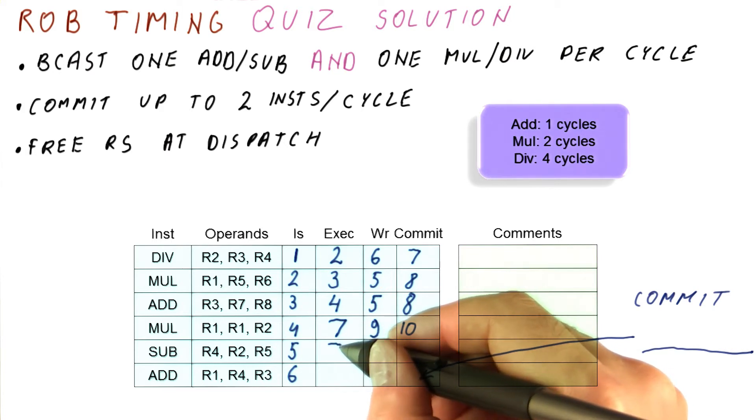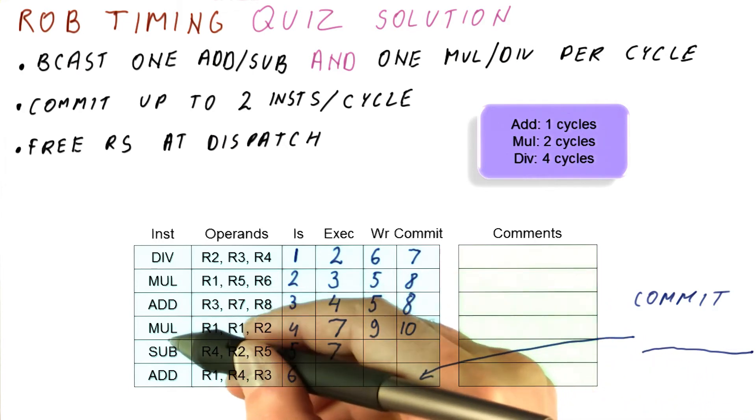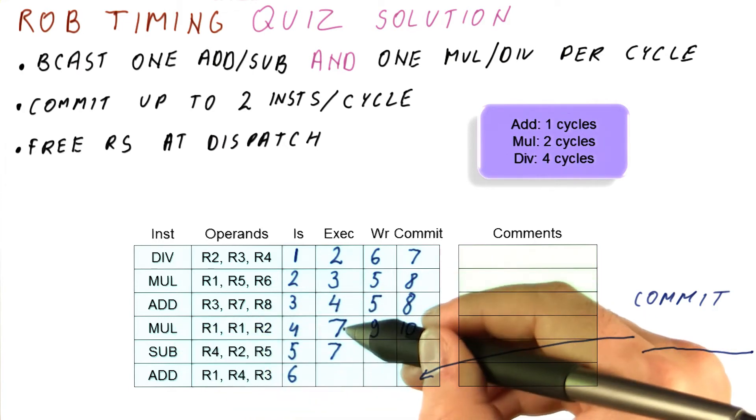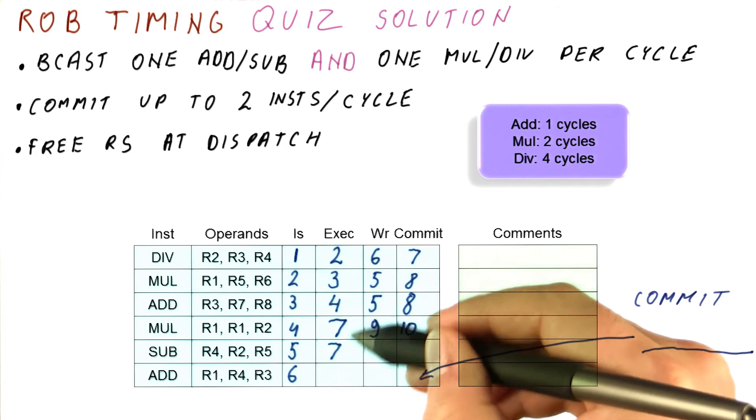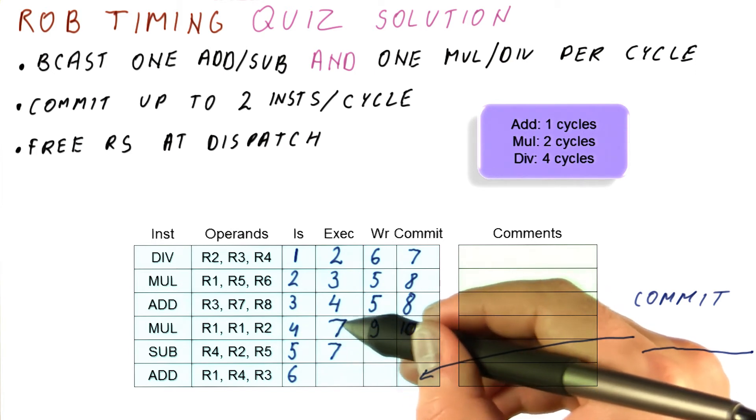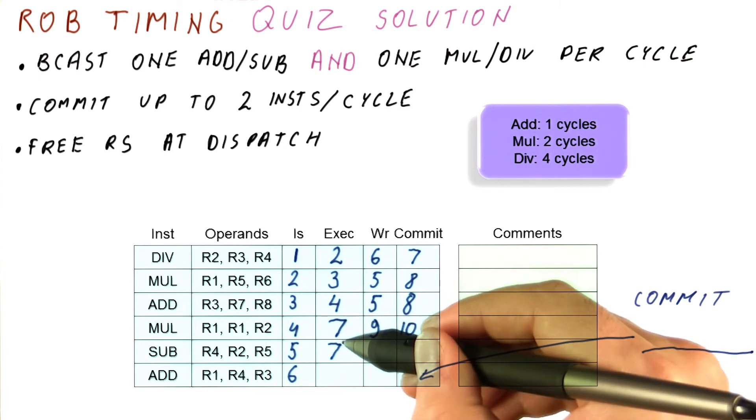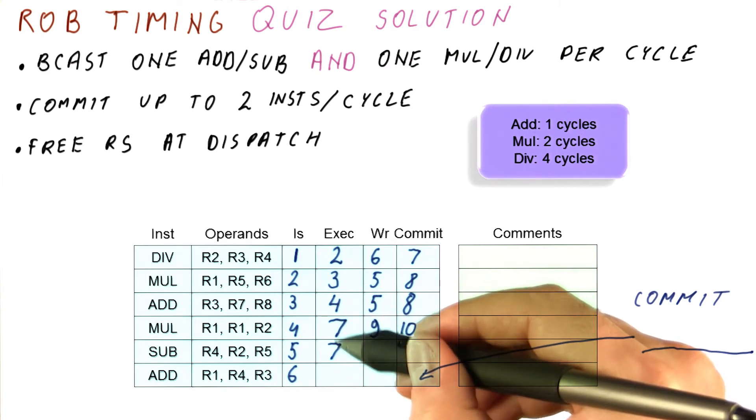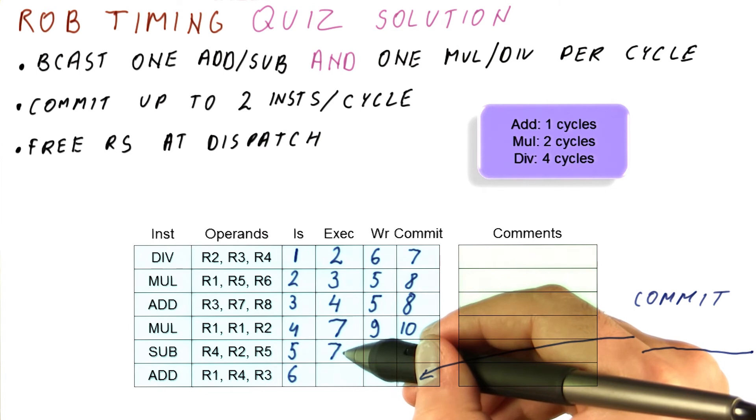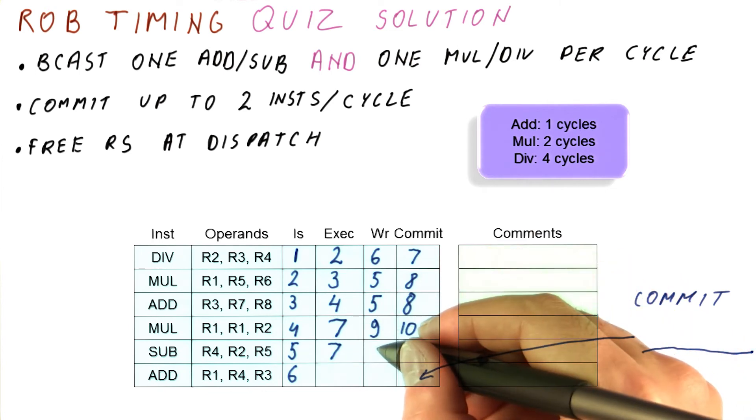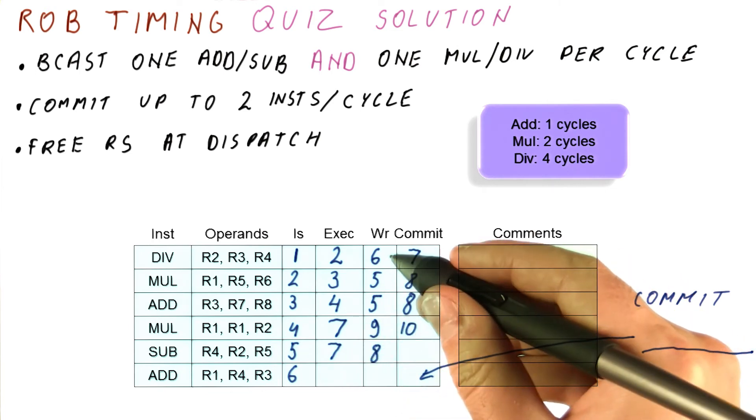So we want to run it in cycle seven, but remember, this is a multiplication. This is a subtract, so they're using different execution units, and they can begin in the same cycle. If another add or subtract was beginning at seven, then we would actually have to wait until eight. But because these are different units, we can begin at seven. And we're going to try to broadcast our result at eight. Nobody else is trying to broadcast at eight, so we will succeed at that.